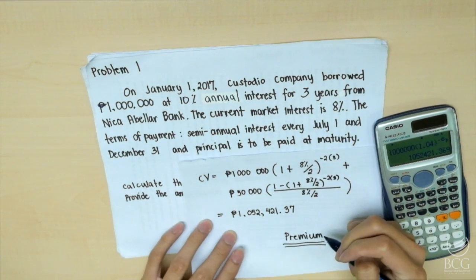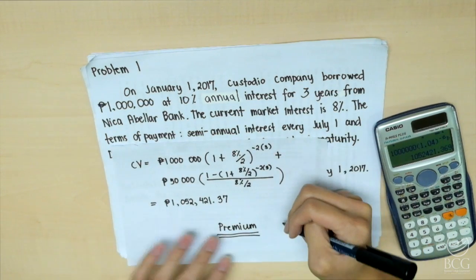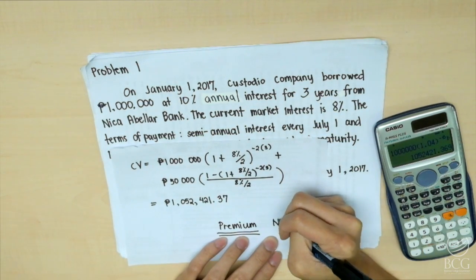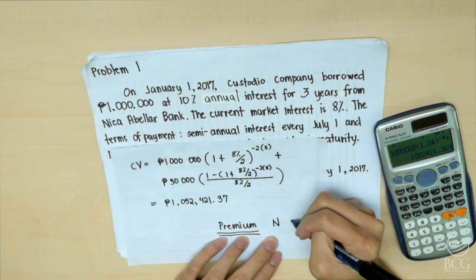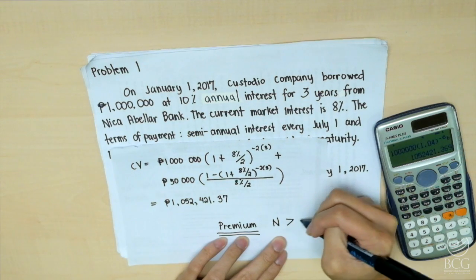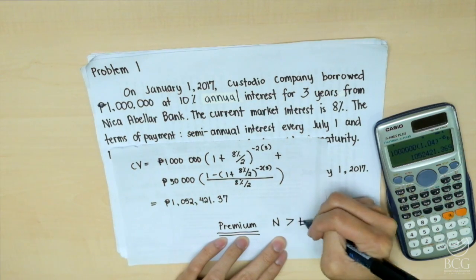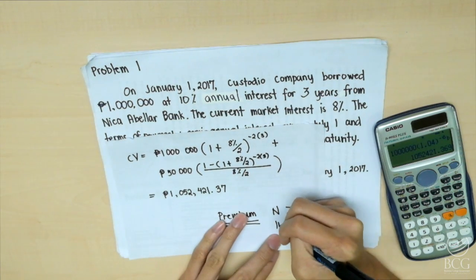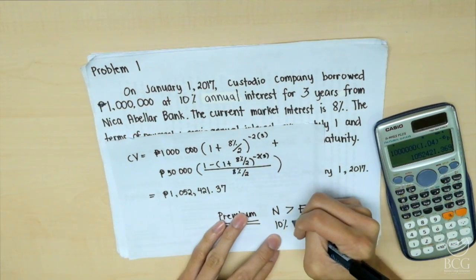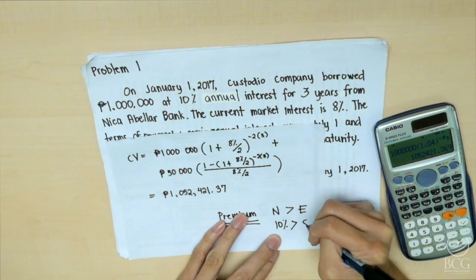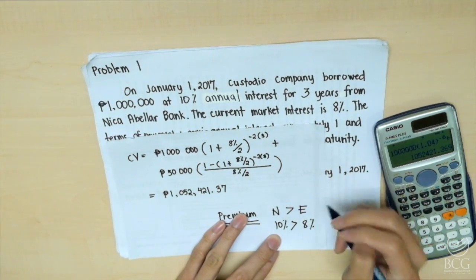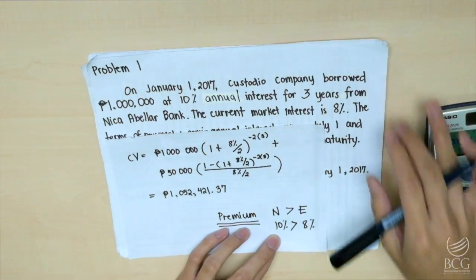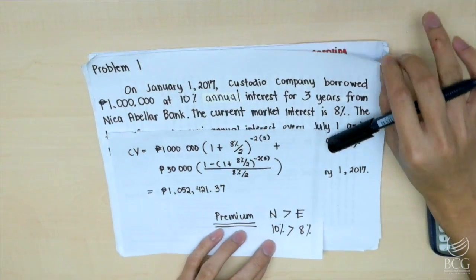Premium takes place only if the nominal interest rate is greater than the effective interest rate. So 10% is greater than 8%. With that, let's do the amortization table.